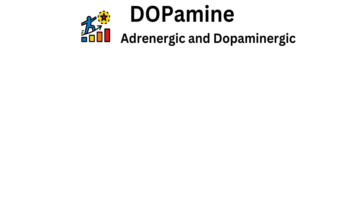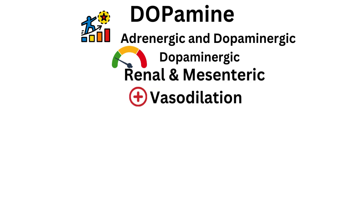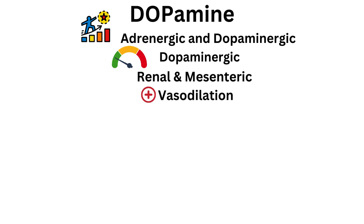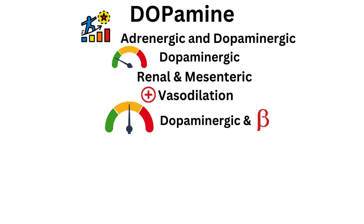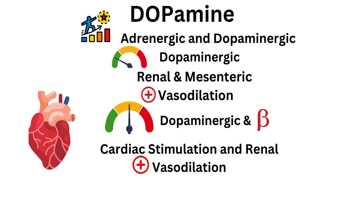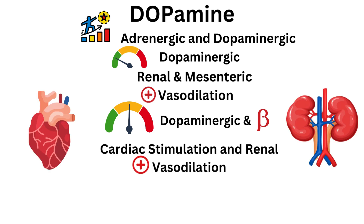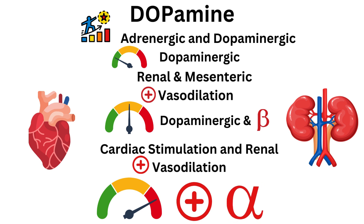Mechanism of action: Dopamine stimulates both adrenergic and dopaminergic receptors. Lower doses are mainly dopaminergic, producing renal and mesenteric vasodilation. Higher doses are both dopaminergic and beta-adrenergic, producing cardiac stimulation and renal vasodilation. Large doses stimulate alpha-adrenergic receptors.